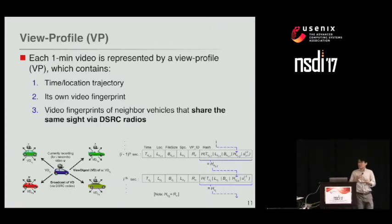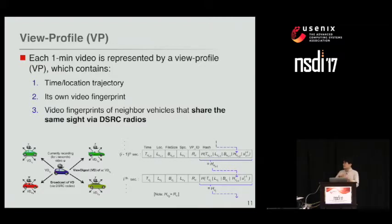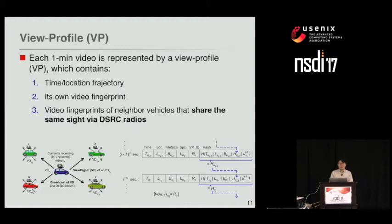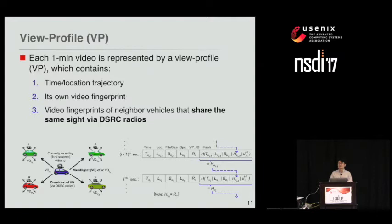Each one-minute video is represented by a View Profile (VP) containing three elements: a one-minute time and location trajectory; fingerprint information, which can be considered a hash of the video; and fingerprints of neighboring vehicles' videos exchanged via DSRC. This means vehicles sharing the same scene exchange this information in real time. VPs are generated in real time, stored in the car, and uploaded to the system whenever the car is connected to the internet as anonymized VPs.